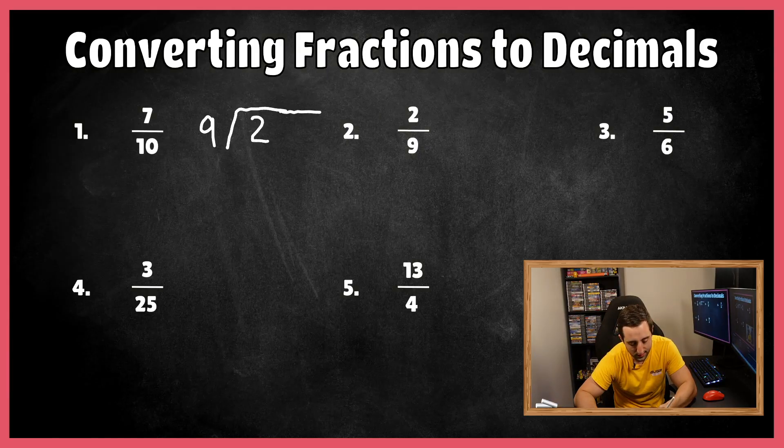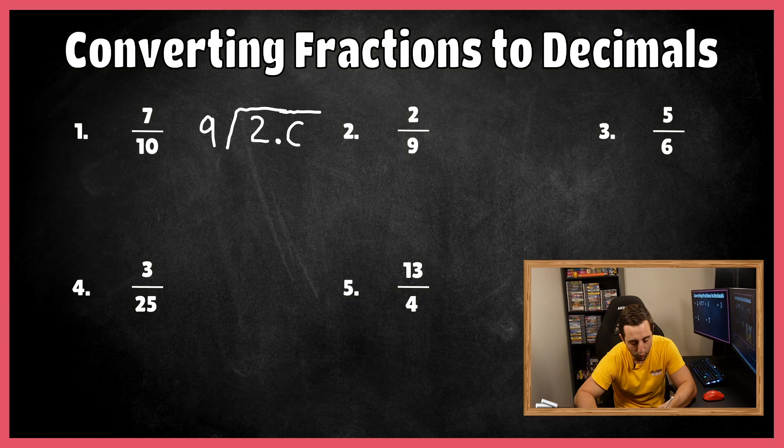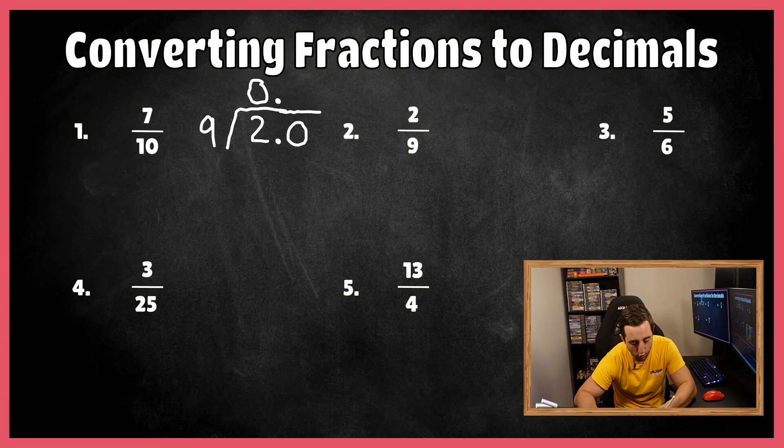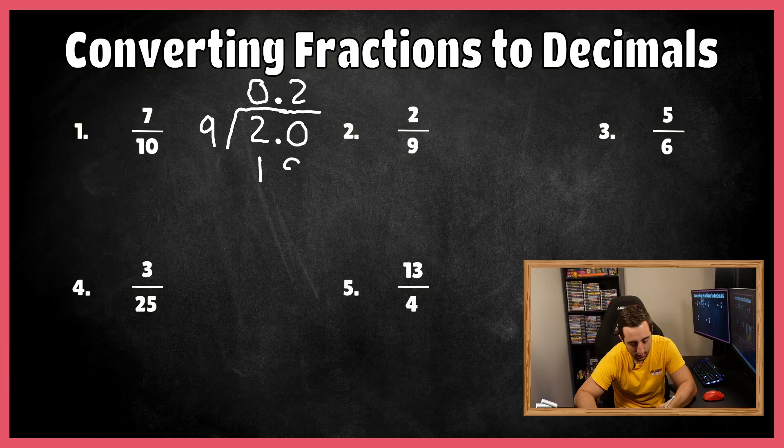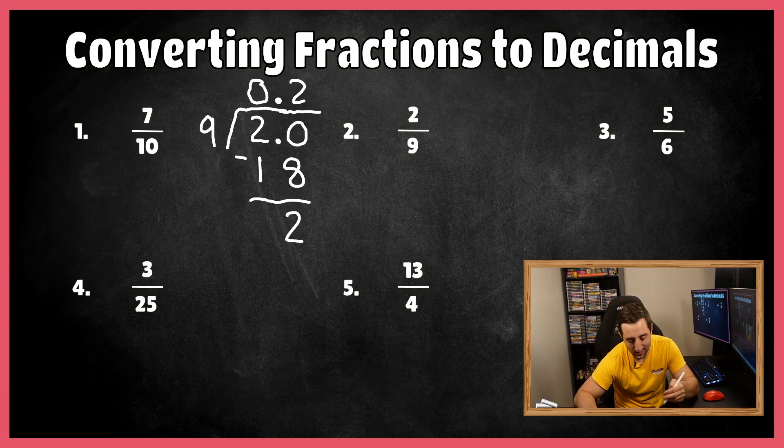How many times does nine fit into the number two? Well, again, it doesn't. So remember, you can extend this two out to say 2.0. Nine doesn't fit into two. Let's put a zero there and then bring that decimal point up into our quotient. And then how many times does nine go into the number 20? Well, it fits twice. Nine times two is 18. If we go ahead and subtract, 20 minus 18 is two.